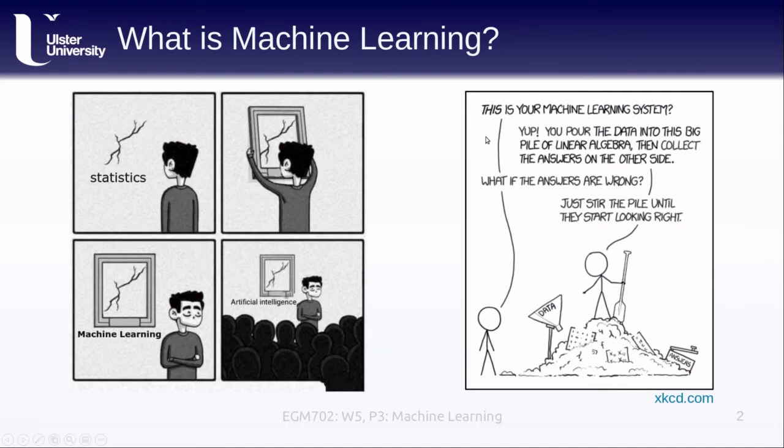In other places you might see, for example in this comic, where our machine learning system is where we're just pouring the data into a big pile of linear algebra and hope that the answers come out the other side. If they're looking wrong, we just keep stirring the pile until we start seeing better answers.